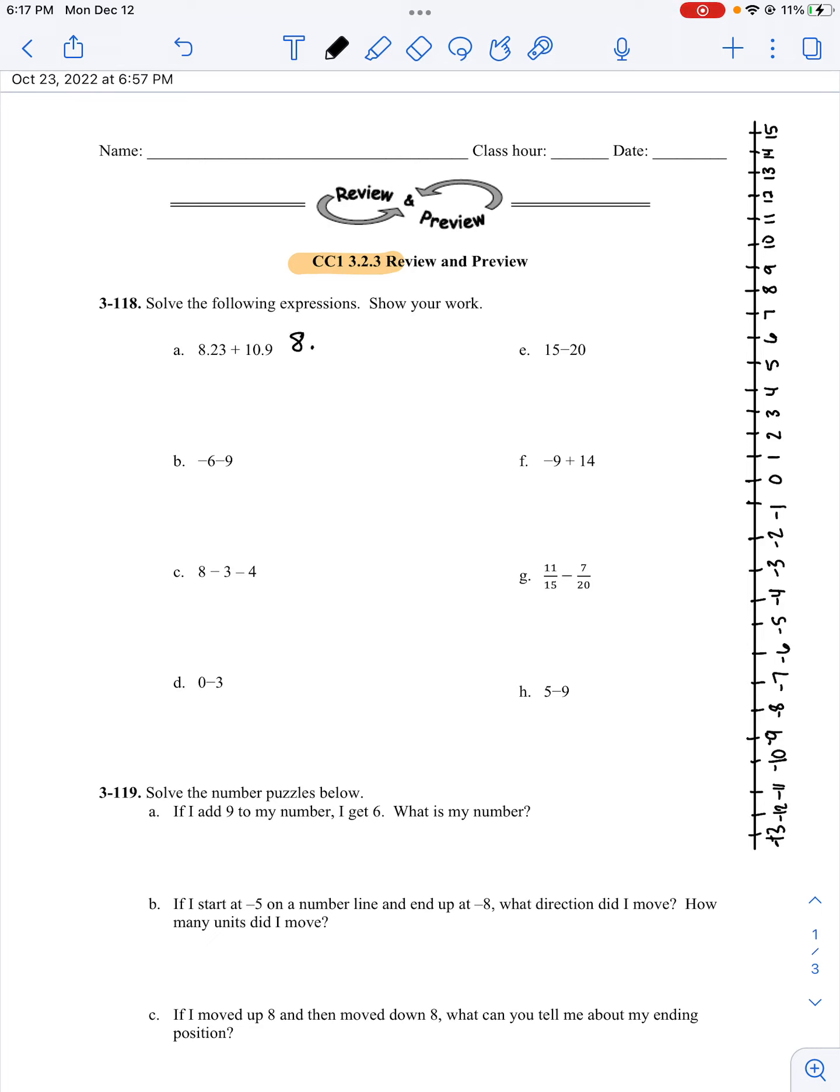Part A, we know how to add decimals, so I'm going to make sure to line up my decimal point. 3 plus 0 is 3, 2 plus 9 is 11, 8 plus 1 is 9, 1 plus nothing is 1. It equals 19 and 13 hundredths.